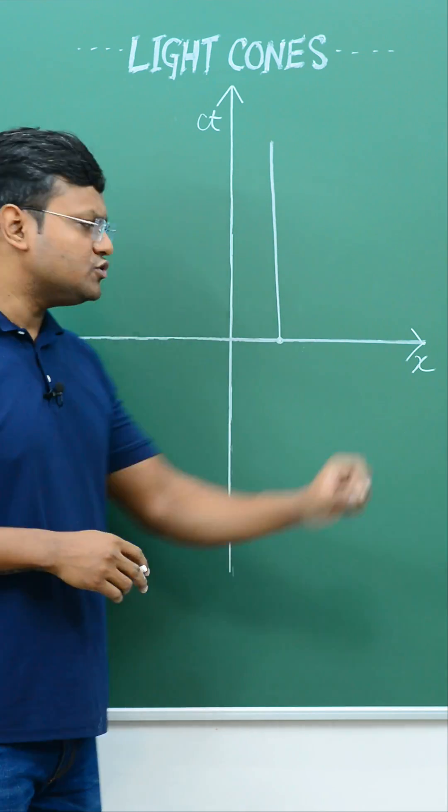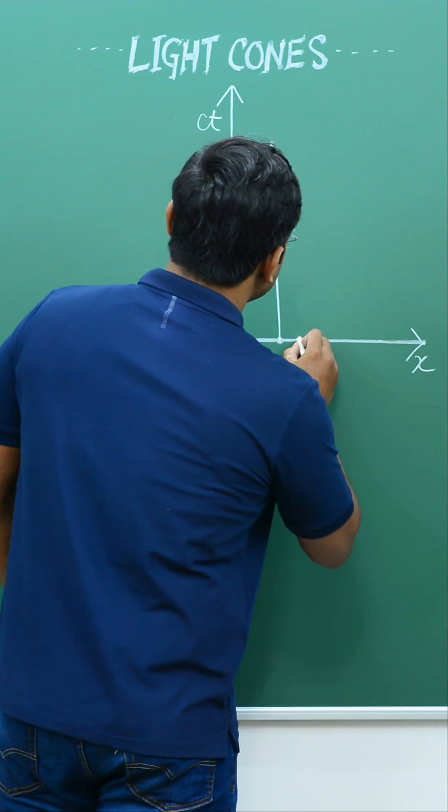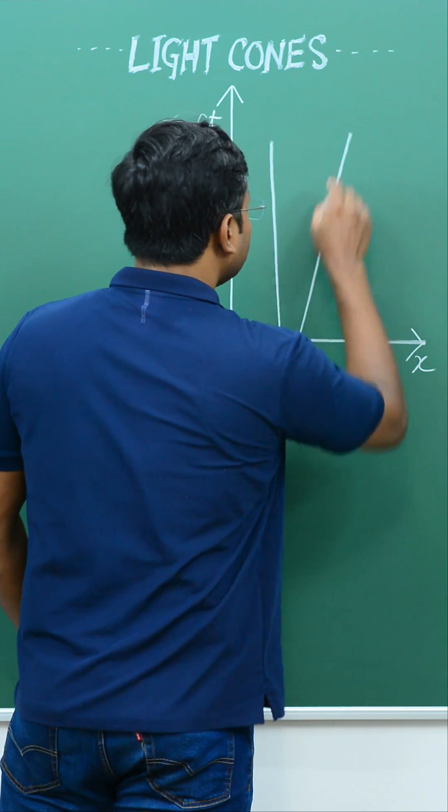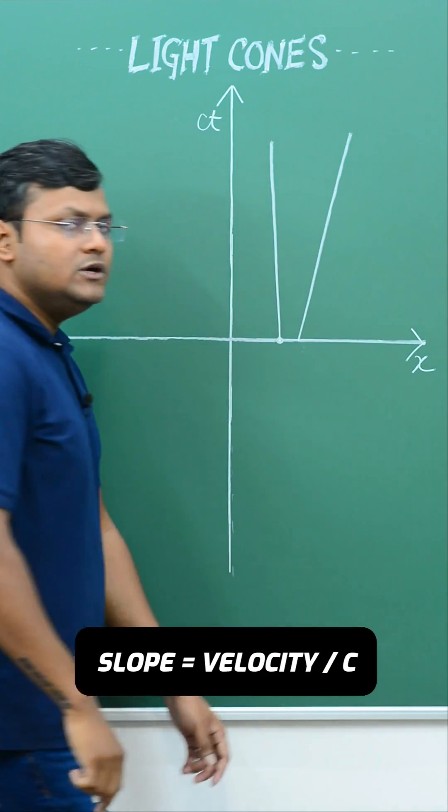An object in uniform motion along a straight line will be represented by a straight line with some slope where the slope equals its velocity.